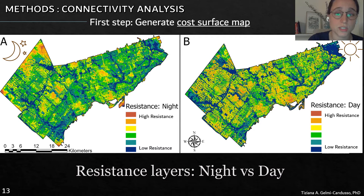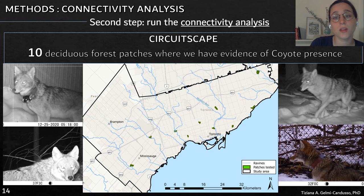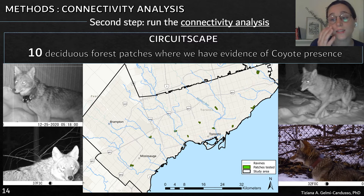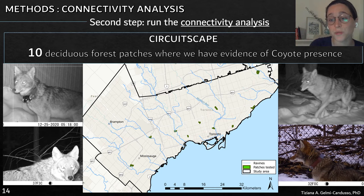With those coefficient estimates, we created our resistance layer. Here we have the resistance during the night versus the resistance during the day, and the resistance values are already higher at this stage. With this resistance layer, we further ran the actual connectivity analysis using Circuitscape. We analyzed connectivity between 10 forest patches across the study site where we have evidence of coyotes. Hypothetically, we are running the scenario where a coyote would have to move between one patch and another, and we are therefore seeing which areas would be most permeable for this movement.